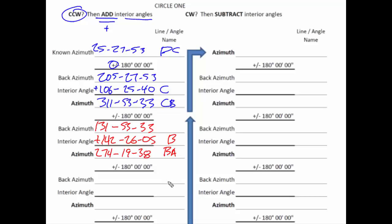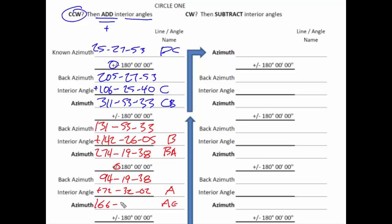Our next interior angle will be at A, and the direction we will find will be A to E. To get the back azimuth we subtract 180, giving a back azimuth of 94 19 38. Our interior angle at A is 72 32 02. Thus, the direction from A to E is 166 51 40.